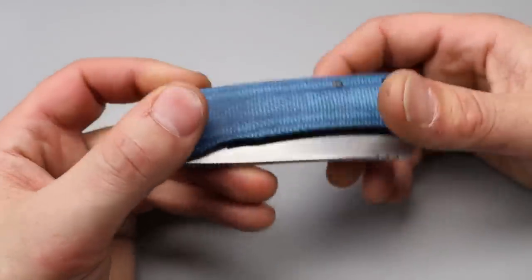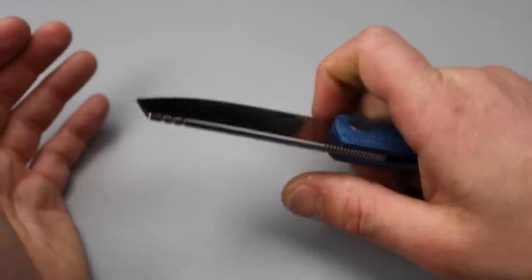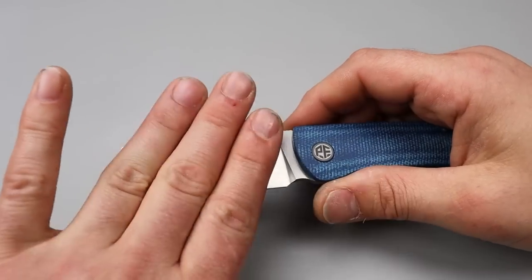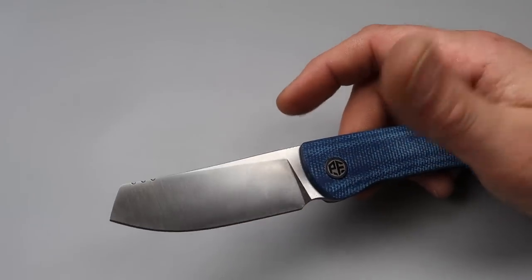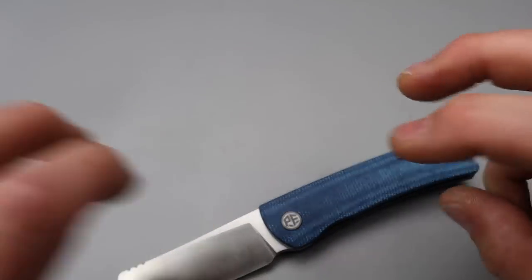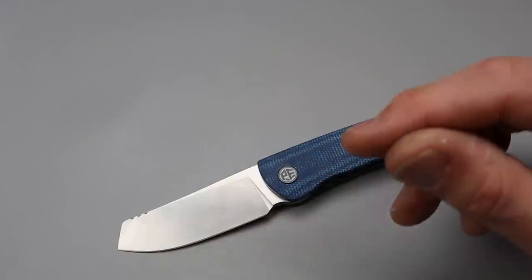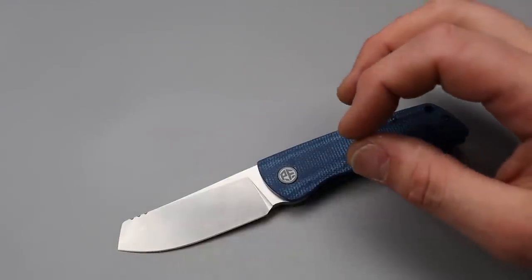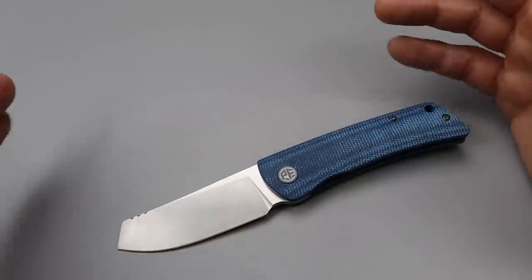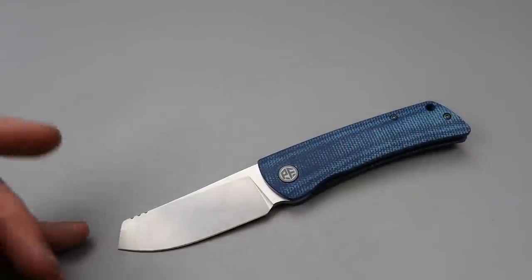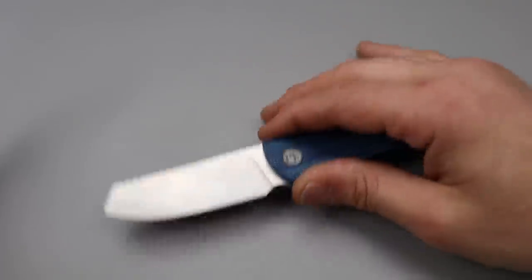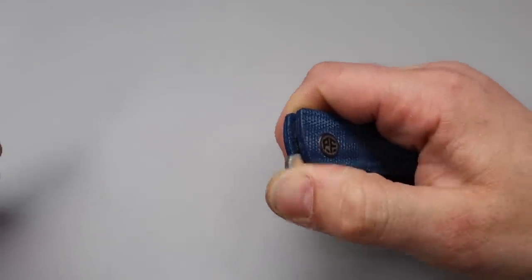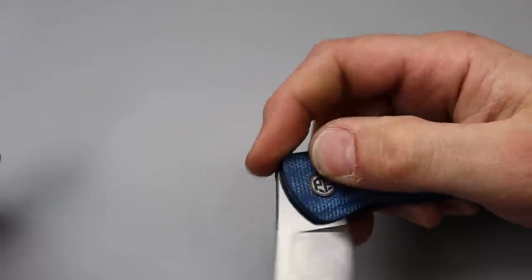So usually for production knives, its edge retention is nowhere near as good as we see from custom heat treaters that are doing one at a time. But it's still a really good steel for what we pay. Its stain resistance isn't that good though. So it's not technically a stainless. It's very close to a stainless, but it's technically not a stainless. As long as you take care of it, you'll be all right to keep it dry, wipe it off, keep it oiled.